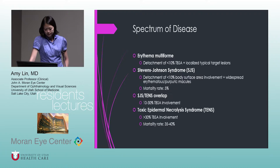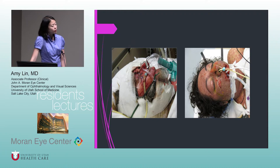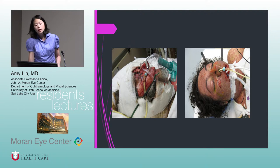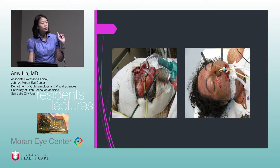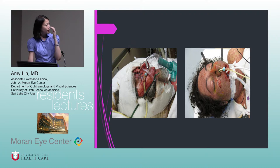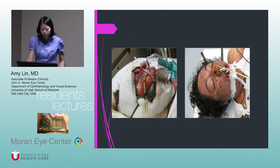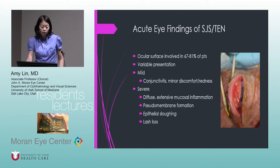Full-blown toxic epidermal necrolysis is greater than 30% surface area involvement, with a mortality rate of 35 to 40%. These patients will look very sick — they're in the burn unit on oxygen. In one picture, what looks like blood all over the face is actually the dermis, because she has no skin over her whole face. The other woman has severe oropharyngeal involvement with significant eye and mouth involvement.